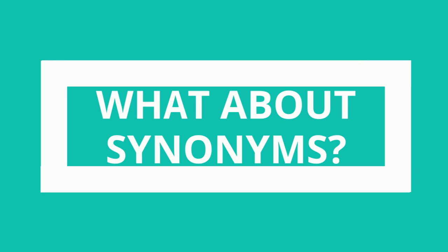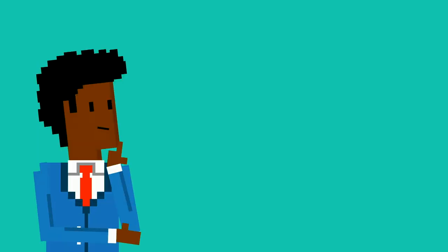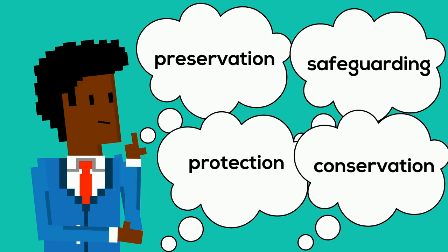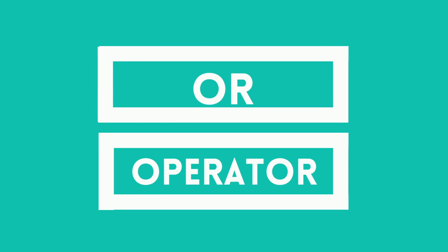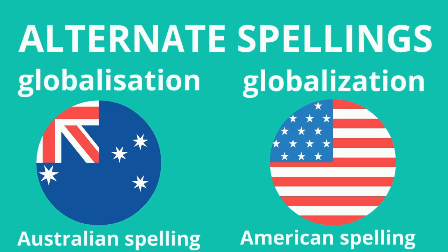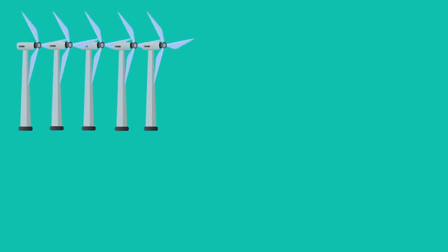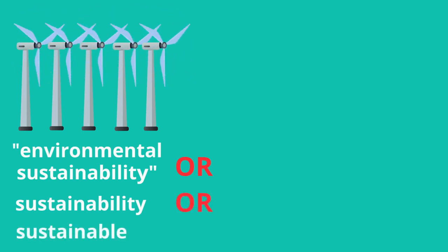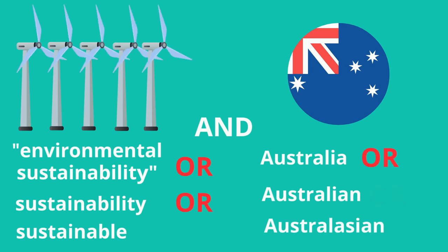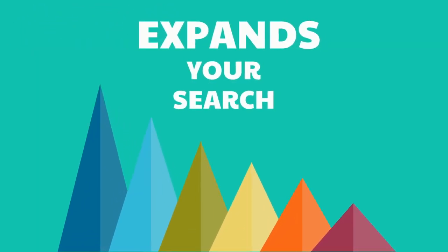But what about synonyms? The concept of environmental sustainability can be expressed in a lot of different ways. Just because this phrase may turn up in your research question doesn't mean that is how it's going to be written in the resources you're looking for. Search engines take our keywords very literally. That is when we can use the OR operator. It's very useful when there are multiple synonyms for a word or alternate spellings, like 'globalization.' Look at this search: 'environmental sustainability OR sustainability OR sustainable AND Australia OR Australian OR Australasian.' This expands your search, letting you see more potential sources without needing every keyword to be present.